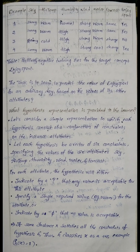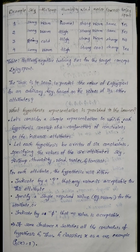If instance x equals sunny, warm, normal, strong, warm, same, and x satisfies the hypothesis h — for example, the first example also has warm, normal, strong, warm, same — then h(x) = 1. This is a positive training example. The constants are satisfied.